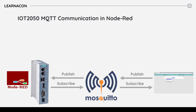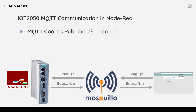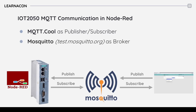Now I'll dive into the application defined at the beginning of this video. We have three elements in this communication. The first one is MQTT.cool, which is a web-based test client we use for both publishing and subscribing. Then we use a test server provided by MQTT as our broker. The third element is Node-RED running on the SIEMENS IoT 2050.